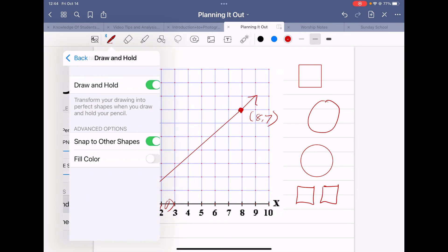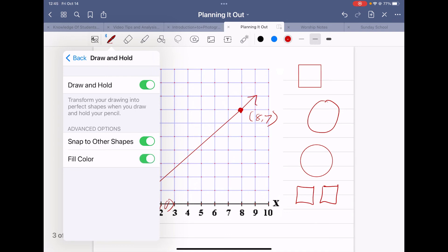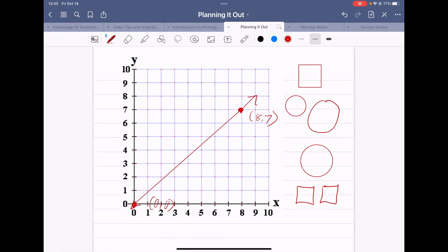There's a square. So different shapes will automatically snap to hold for you, and all you have to do is turn on that 'Draw and Hold' and 'Snap to Other Shapes' option. If you wanted to fill it, you could turn on your fill color.